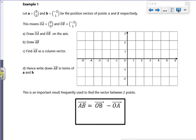Let's have a look at this first example. Example one says, we've got A is 3 across 2, B is minus 2, 1. That's the position vectors of A and B. So OA is (3, 2), OB is (-2, 1).